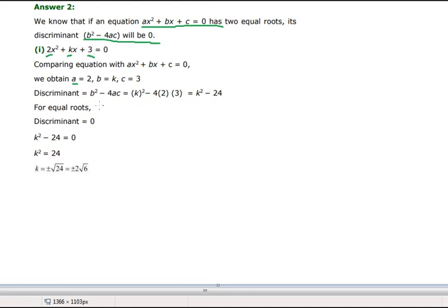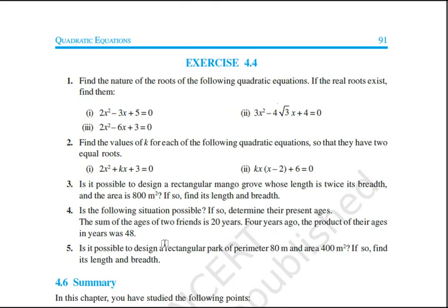After substituting the values in b² - 4ac and calculating, we are getting k² - 24. Now according to the rule, if the discriminant equals 0, then they have two equal roots. So discriminant equals 0. After solving, transposing -24 to get +24, we don't have the root of 24, so it will be ±√24 or ±2√6. This way you will solve the remaining parts.